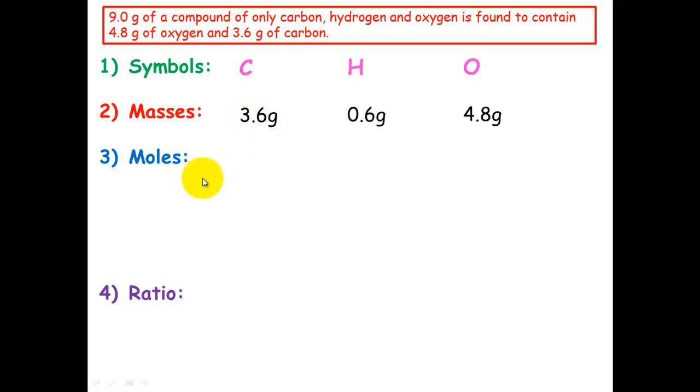Okay, now we just need to work out the moles as we've worked out previously. So we use N equals mass over molar mass. So 3.2 divided by 12 equals 0.3 for carbon. Hydrogen, 0.6 divided by 1, its molar mass, which equals 0.6. And oxygen, 4.8 divided by 16, oxygen's molar mass, which equals 0.3. So to find the ratio, we divide these numbers here by the smallest number, which is 0.3.